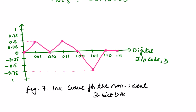Therefore, the INL for the DAC is considered to be the worst case INL of plus 0.5 LSB and minus 0.75 LSB. This is the INL plot for the non-ideal 3-bit DAC. In the next video, I have discussed offset error, latency, signal-to-noise ratio, dynamic range, gain error, and also solved tutorial problems. Thank you.